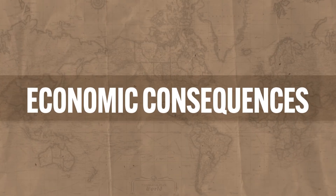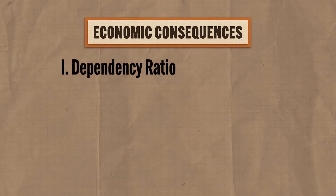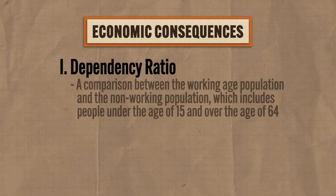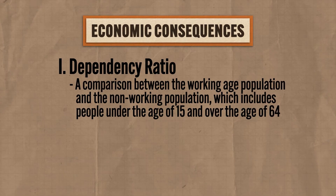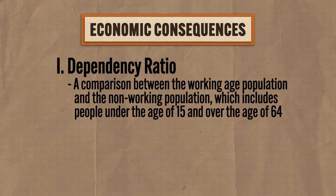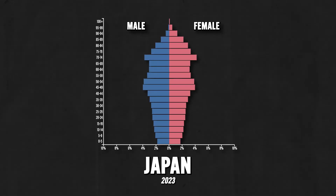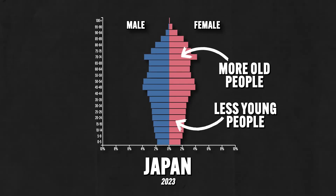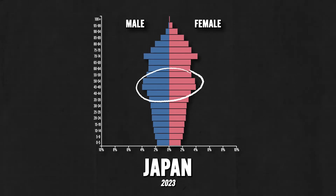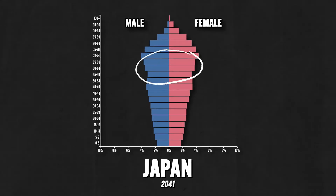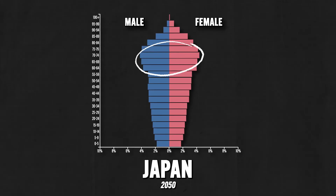Now let's consider the economic consequences of an aging population. As a population gets older, its dependency ratio increases. The dependency ratio is a comparison between the working-age population and the non-working population, which includes people under 15 and over 64. Here we're looking at Japan's most recent population pyramid — the poster child for an aging population. You can see how there are so many more older people than younger people. There is a bulge in the working-age population, but in only a few years they're moving up to the dependent category, and that's going to have some serious economic consequences.